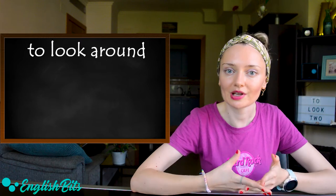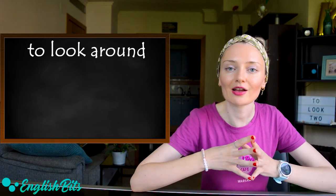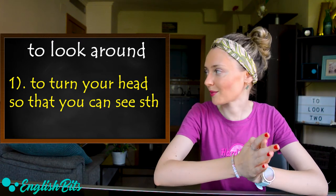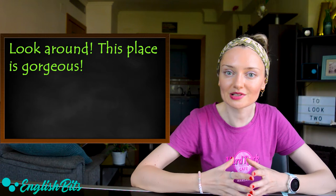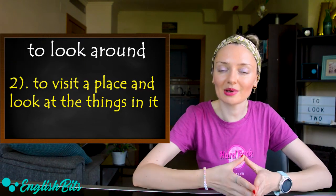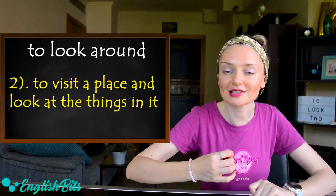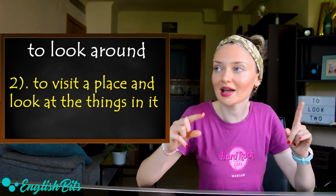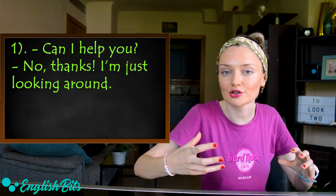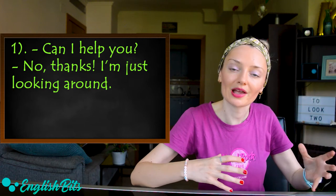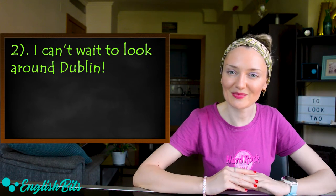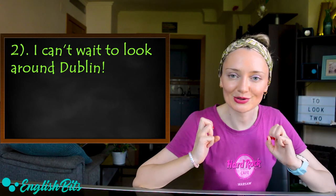Number three: to look around. It has two meanings. The first one is to turn your head so that you can see something. For example: look around — this place is gorgeous! The second meaning is to visit and explore a place and to look at the things in it. For example, imagine you're in a shop and the assistant asks 'Can I help you?' and you answer 'No thanks, I'm just looking around.' And one more example: I can't wait to look around Dublin.